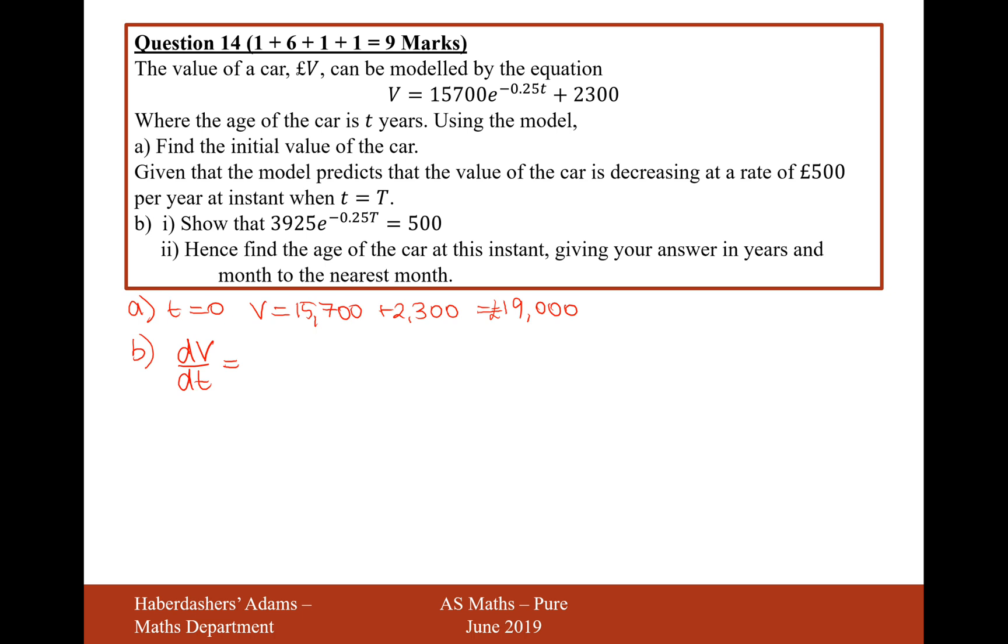So we need to do on the calculator, 15,700 times minus 0.25. And that would give us minus 3,925 e to the minus 0.25 t. And that's going to equal the decreasing rate, that would be minus 500 because that's the rate of change of the value of this car. Therefore, 3925 e to the minus 0.25 t equals 500 when we cancel out the negatives on both sides.